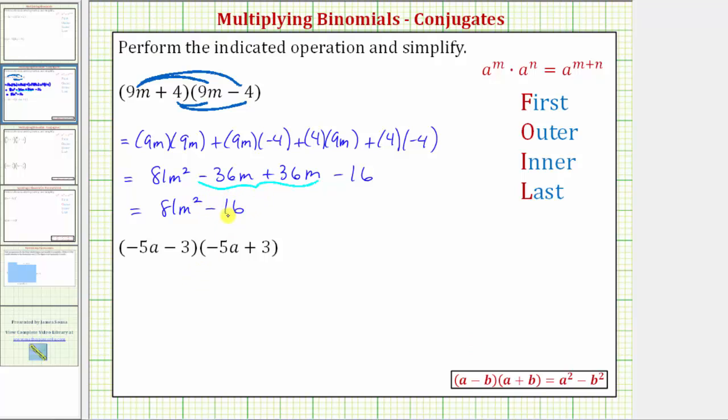Before we look at our second example, let's look at this formula shown here below. The quantity a minus b and the quantity a plus b are conjugates, and the product is equal to a squared minus b squared. So if we did try to apply this formula, notice how a is equal to 9m, and b is equal to 4.